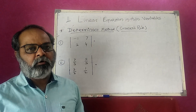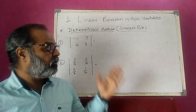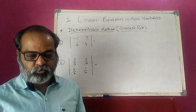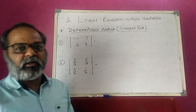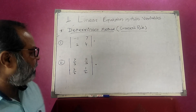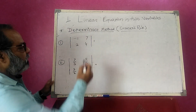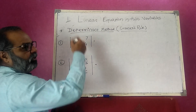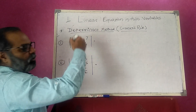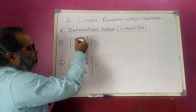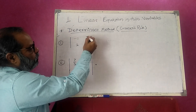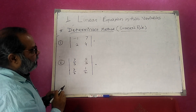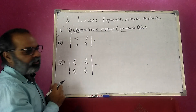So we are solving a determinant now. The determinant is a 2 by 2 matrix and the output is a number. The determinant given has entries, read row by column: minus 1, 7, 2, 4. So what is the value of that determinant?